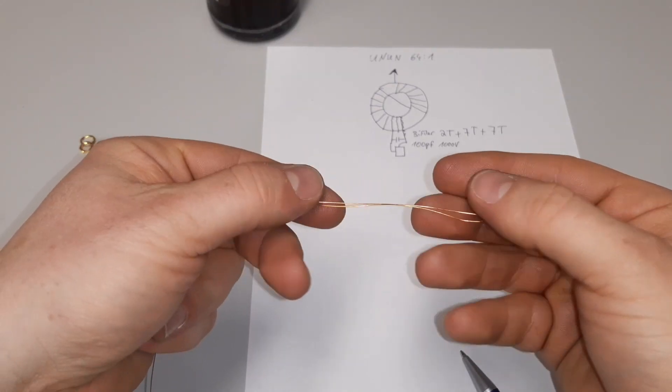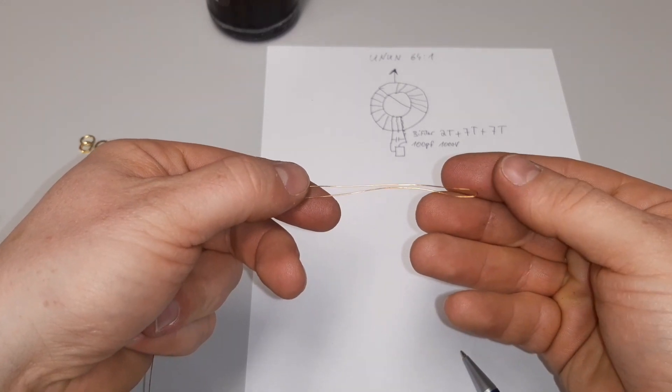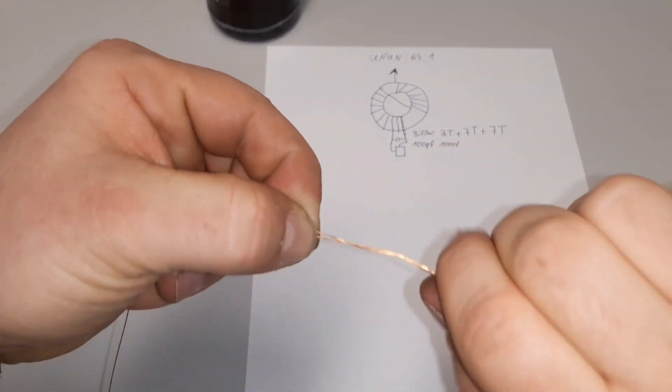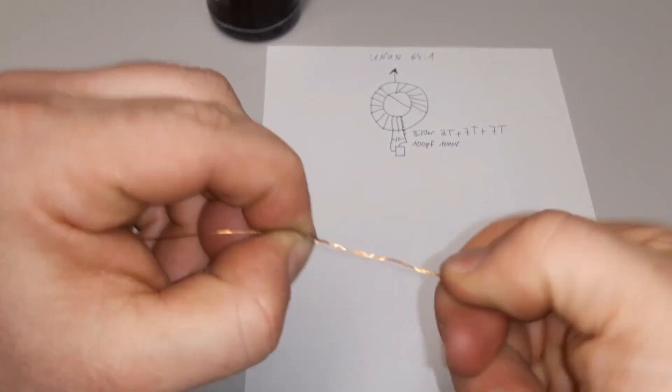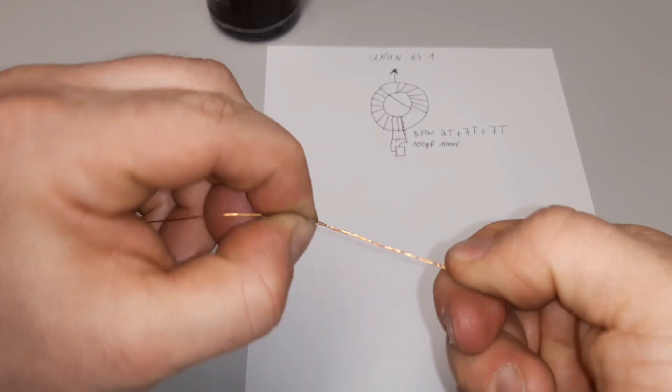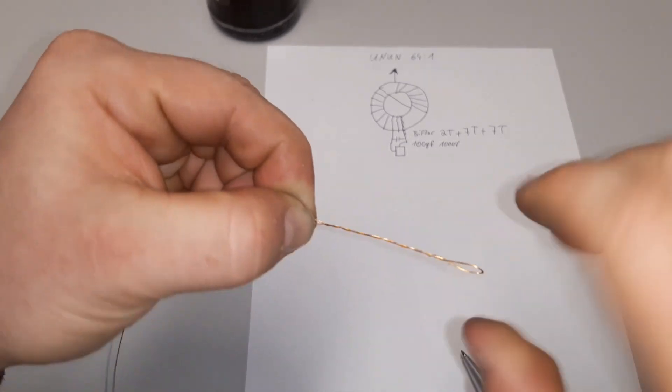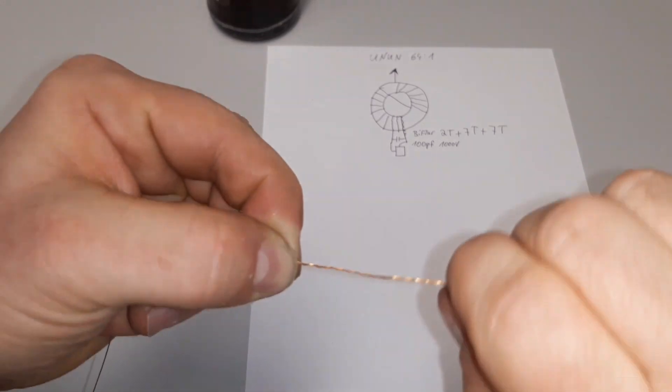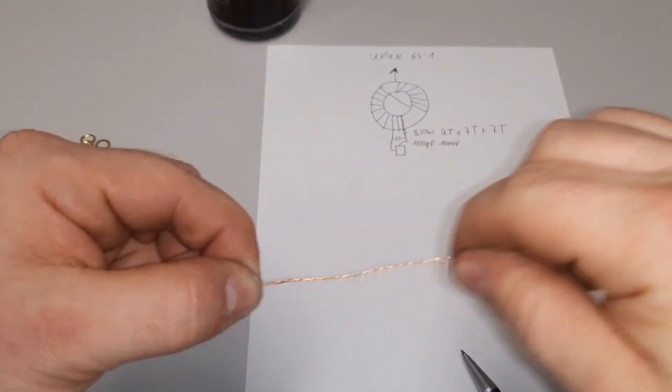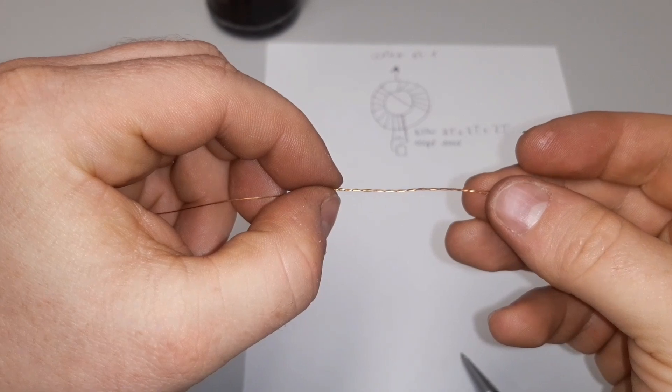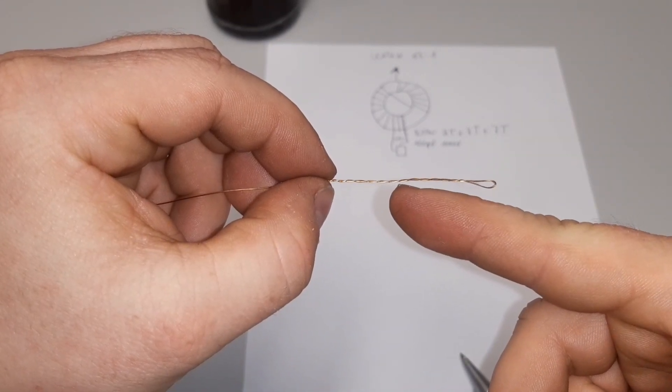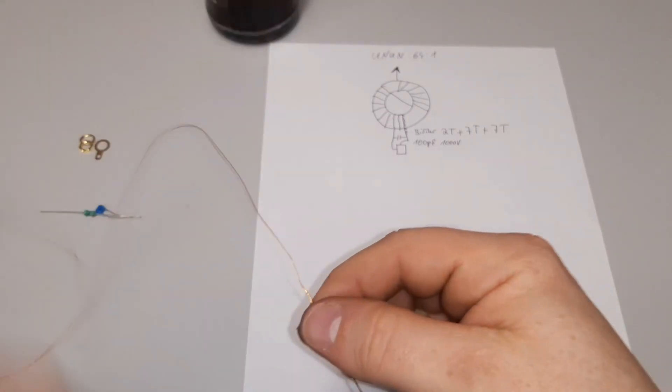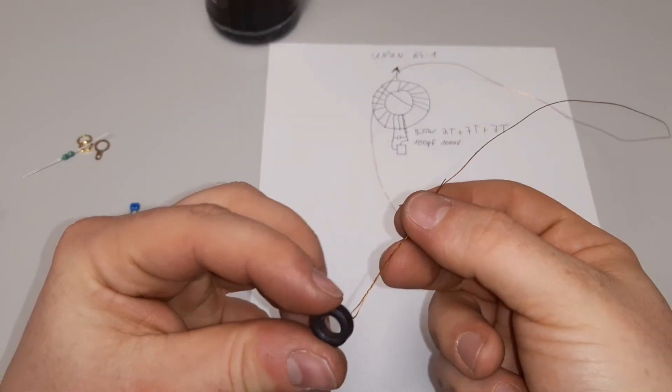That's our coax feeding line here. And this is the center, the outer and the 100 pF, 1000 volt capacitor. Approximately 50 millimeters or two inches. Then you have to twist that. That's not a big problem. One winding is approximately three millimeters.